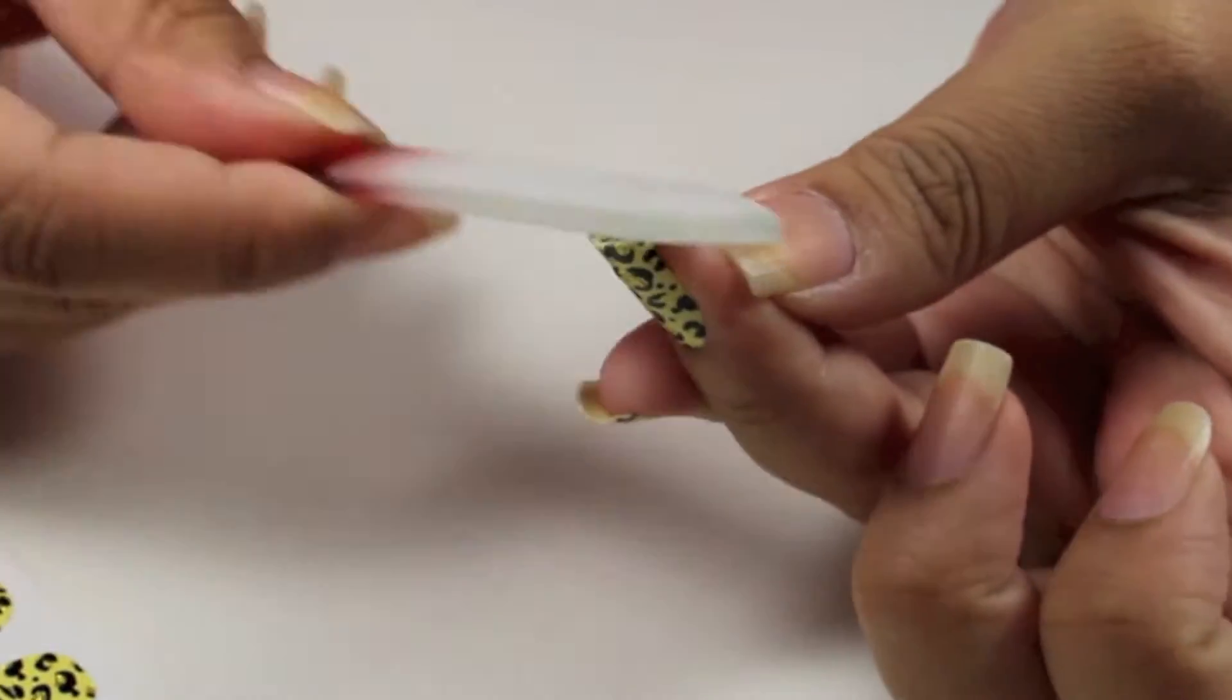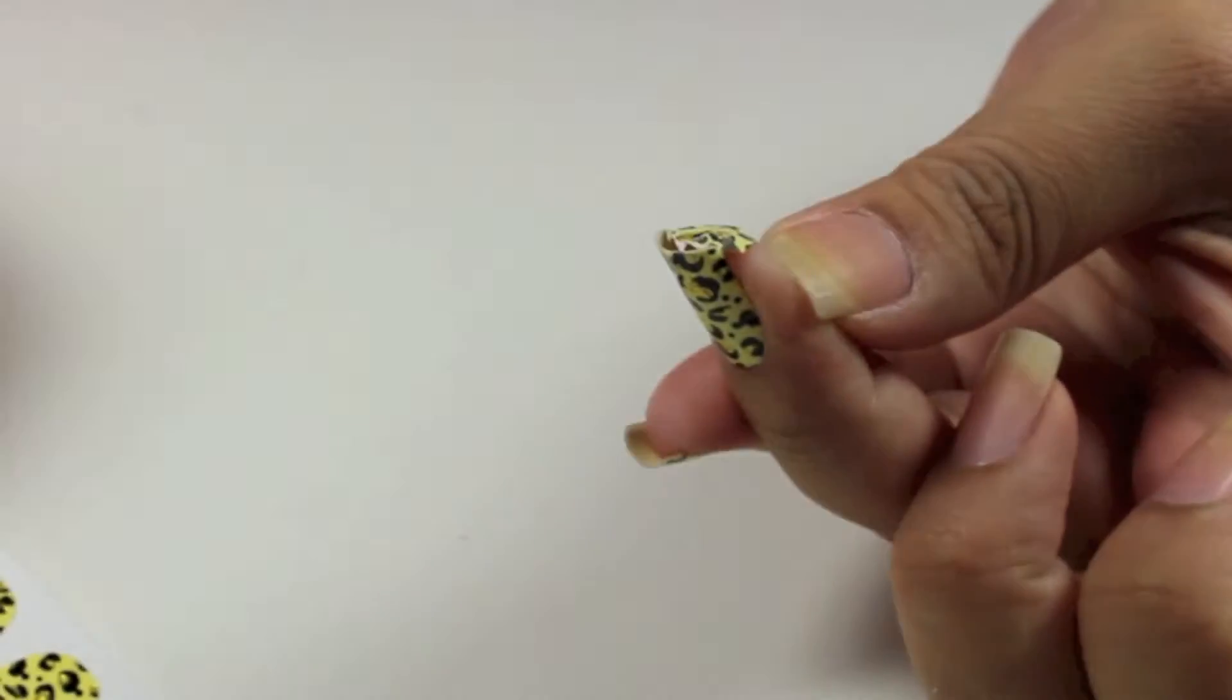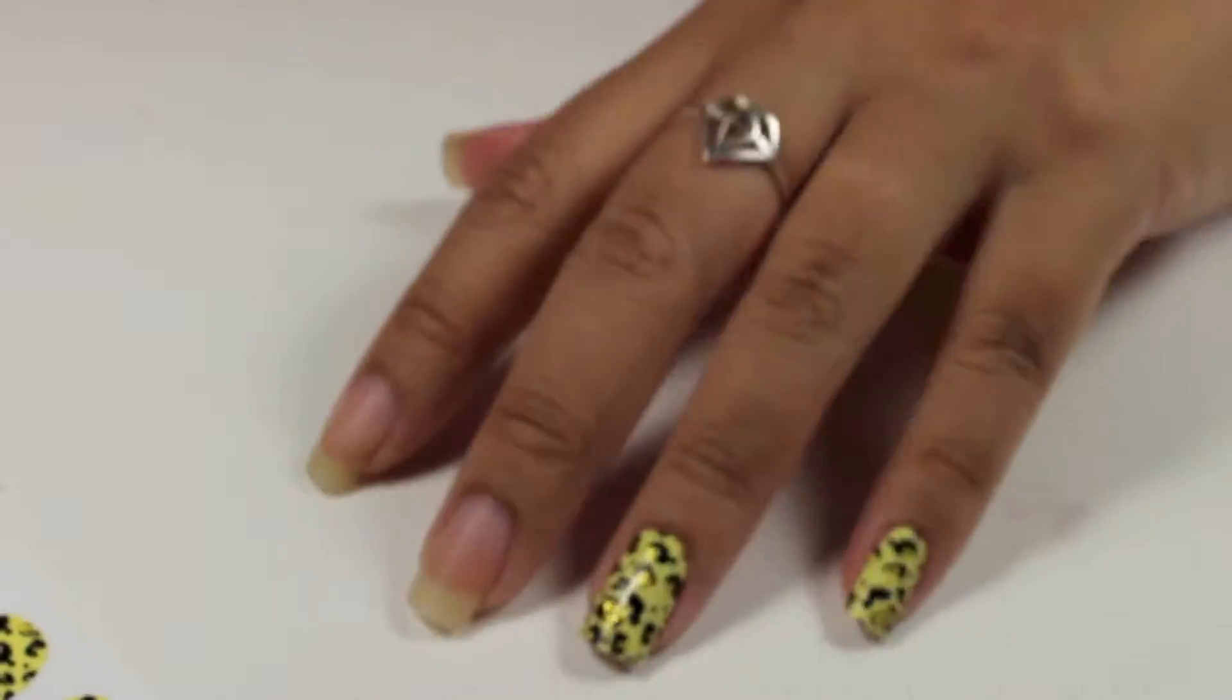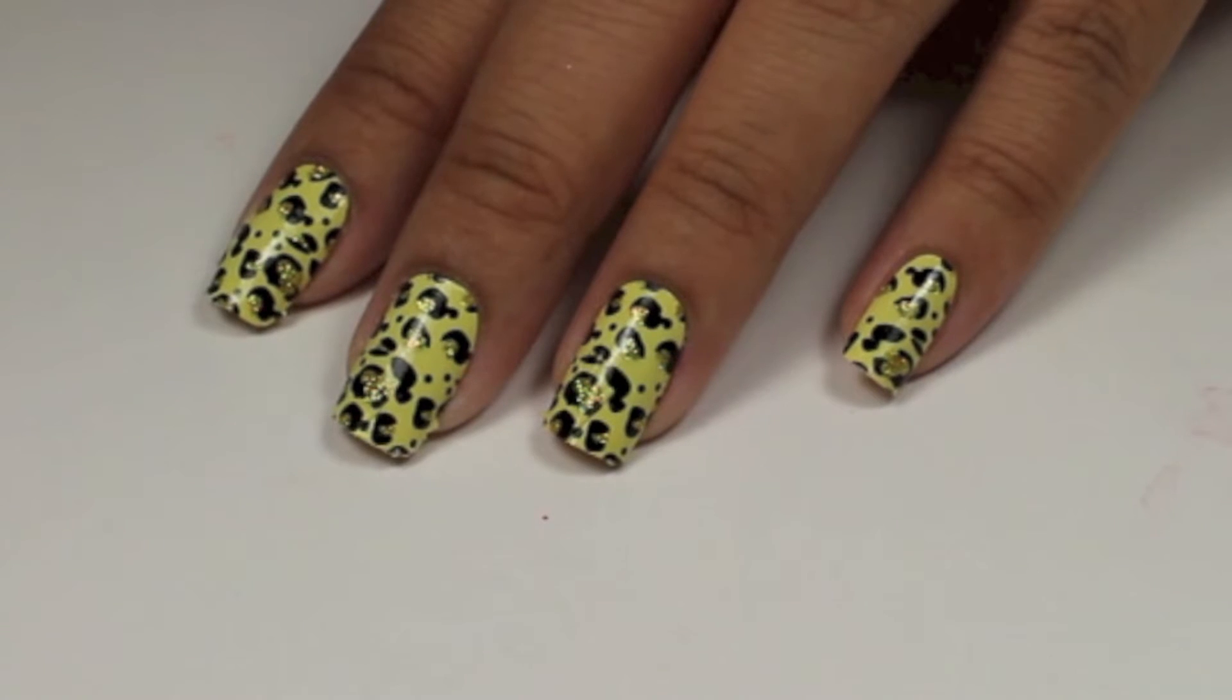When you want to take off your nail foils, all you need to do is use nail polish remover just like any polish. These nail foil wraps are so cute and fun to create a bit of nail art.